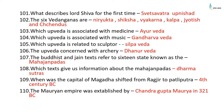The Buddhist and Jain texts refer to sixteen states known as the Mahajanapadas. The Dharmasutra gives us information about the Mahajanapadas. The capital of Magadha was shifted from Rajgir to Pataliputra in the 4th century BC. The Mauryan Empire was established by Chandragupta Maurya in 321 BC.